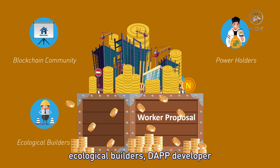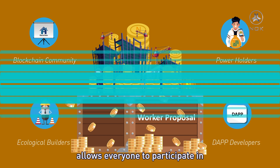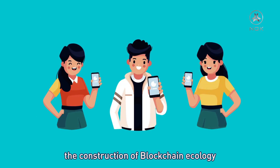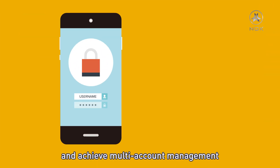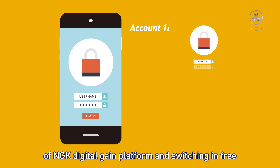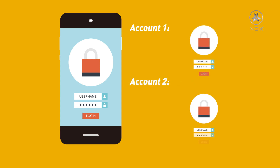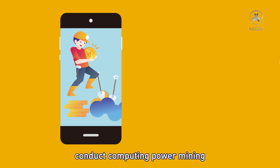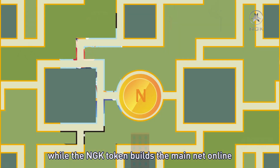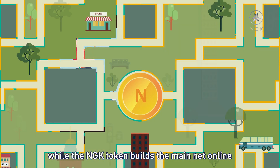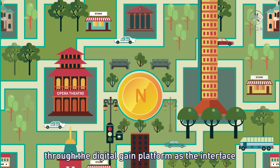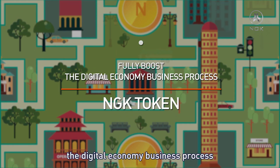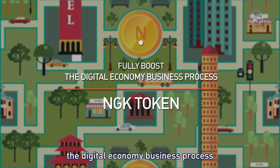Ecological builders and dApp developers allow everyone to participate in the construction of blockchain ecology, and achieve multi-account management of the NGK digital gain platform with free switching. With a mobile phone, users can easily conduct computing power mining, while the NGK token builds the main net online through the digital data platform as the interface, fully boosting the decentralization of the digital economy business process.